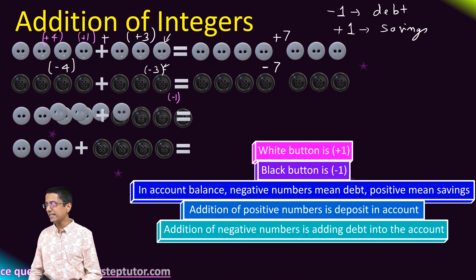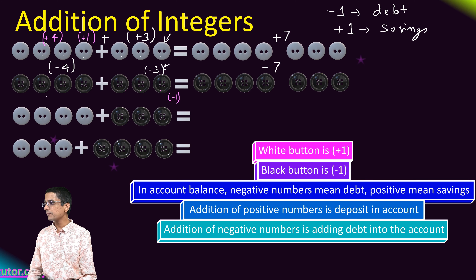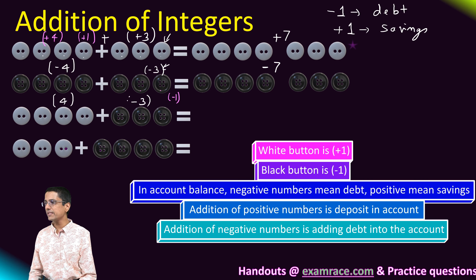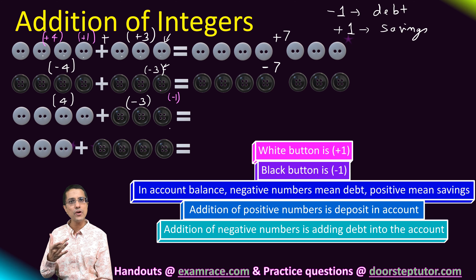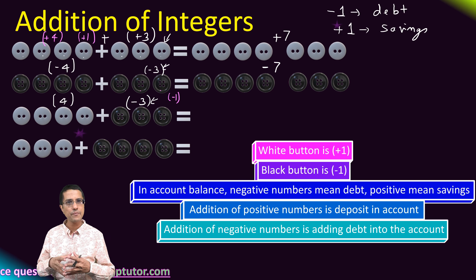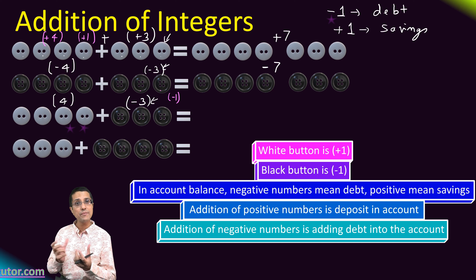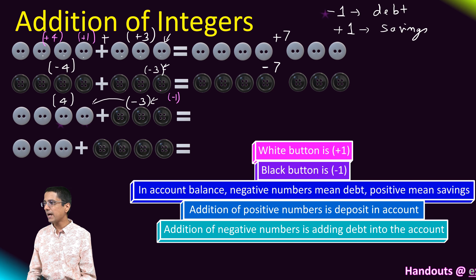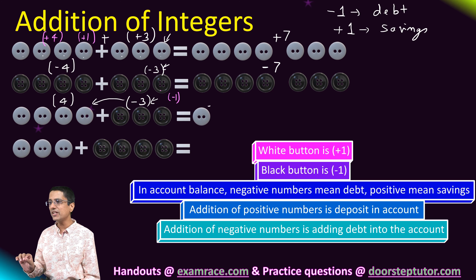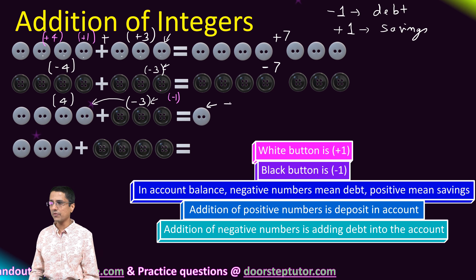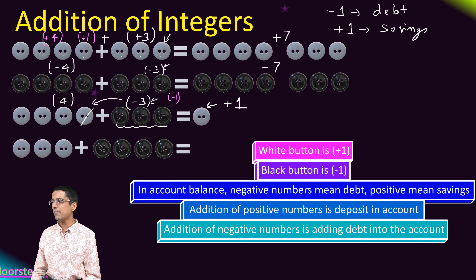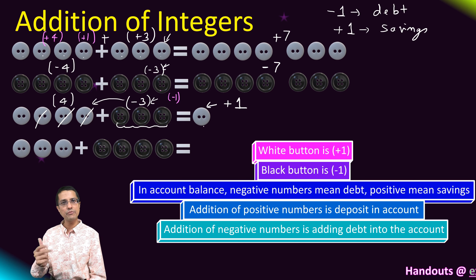Case three: I have a balance of four rupees and I am taking on a debt of three rupees, or withdrawing three rupees. All three rupees can be fulfilled from my balance, and one extra rupee is still left in my account. So my balance becomes plus one.